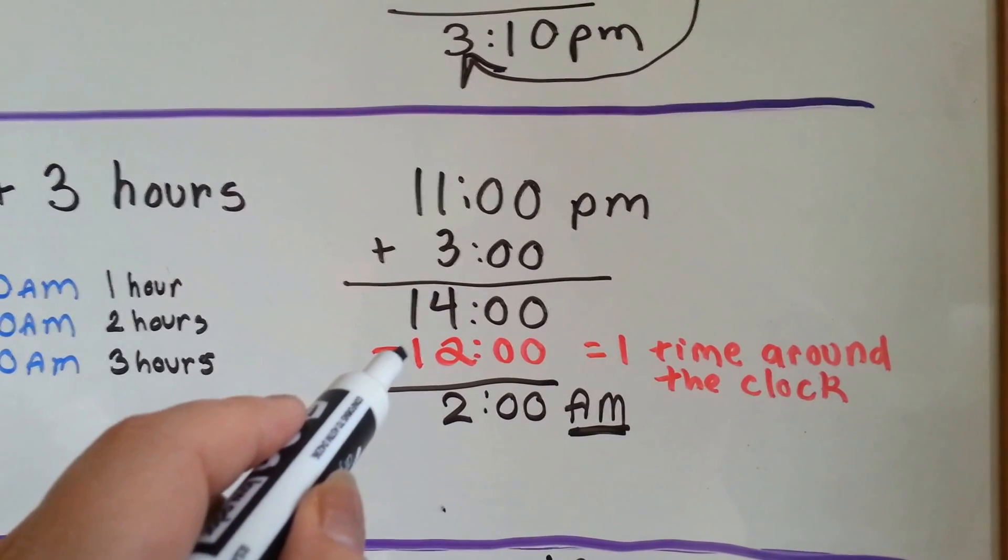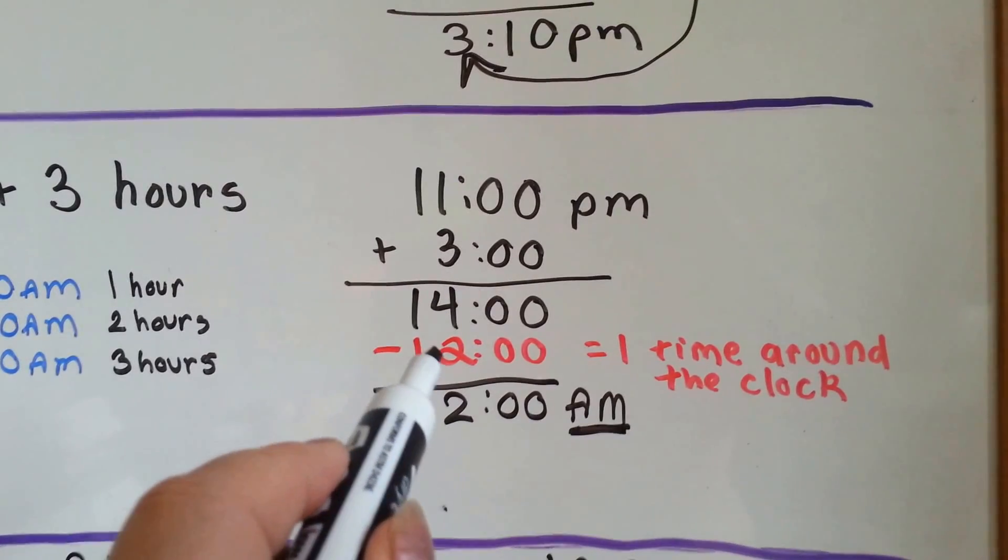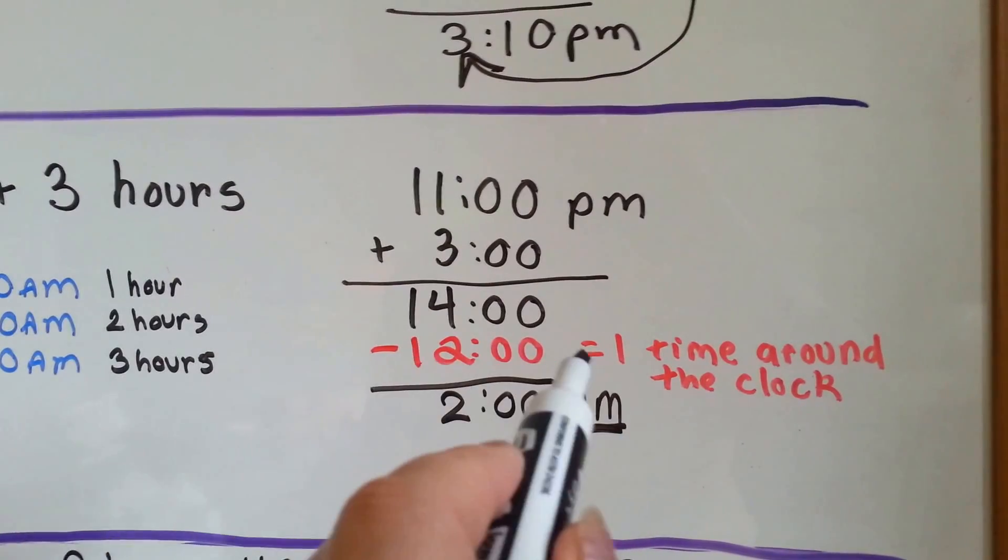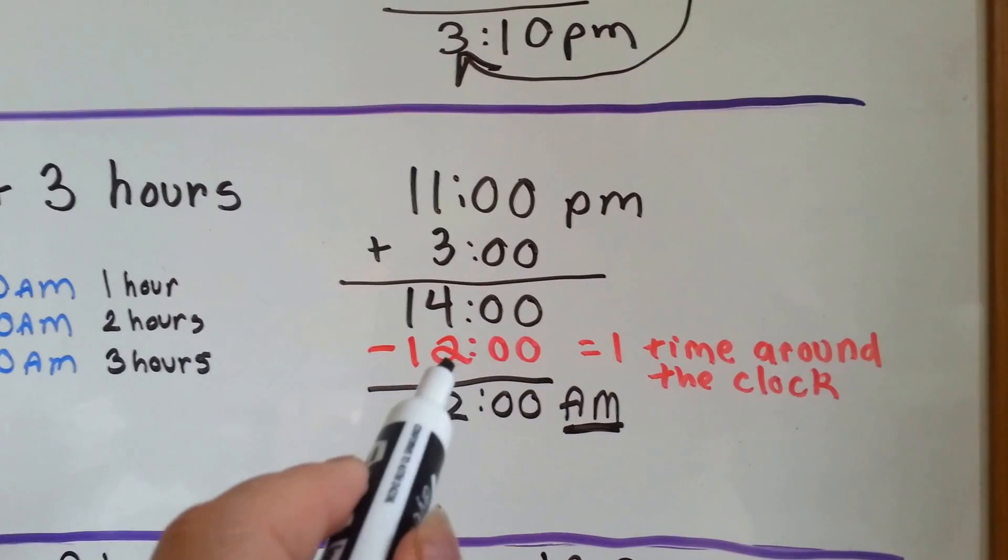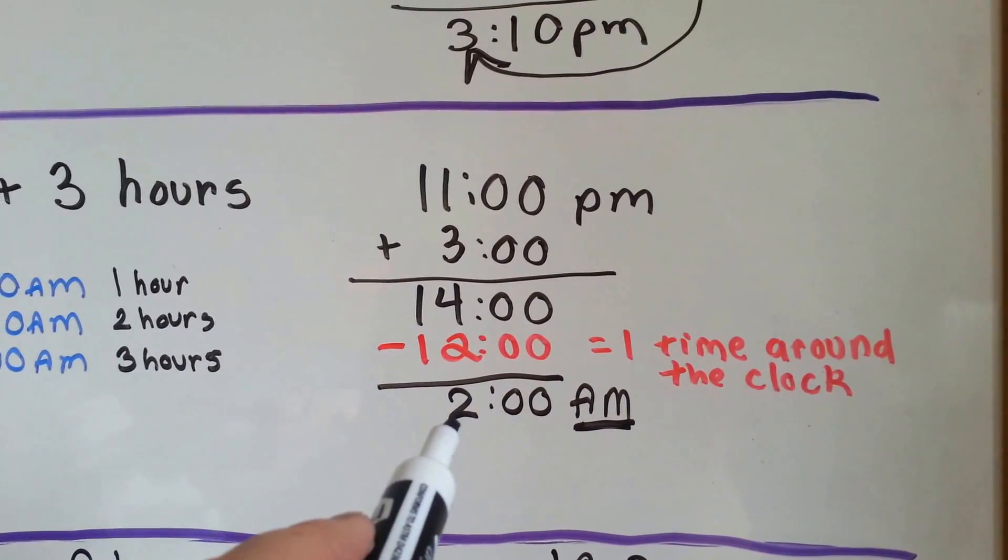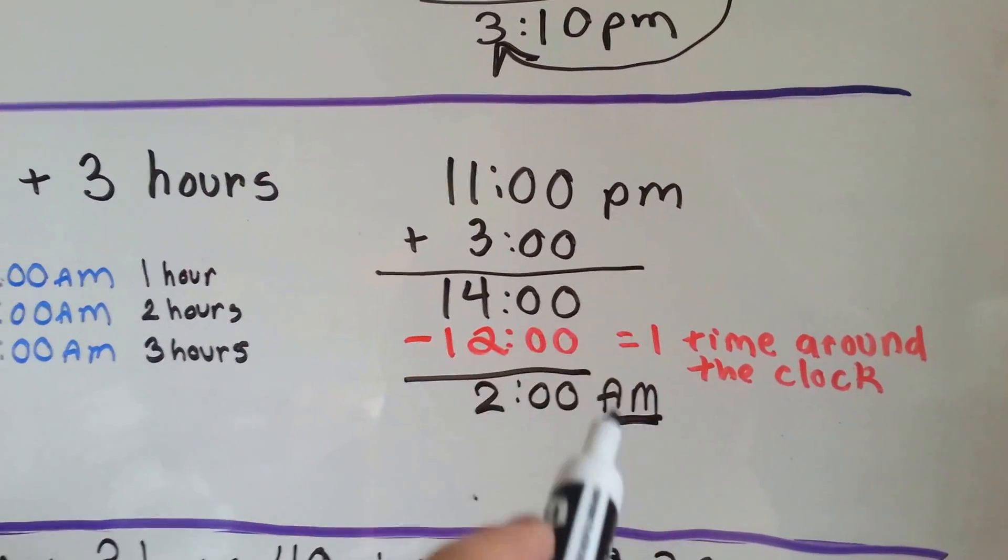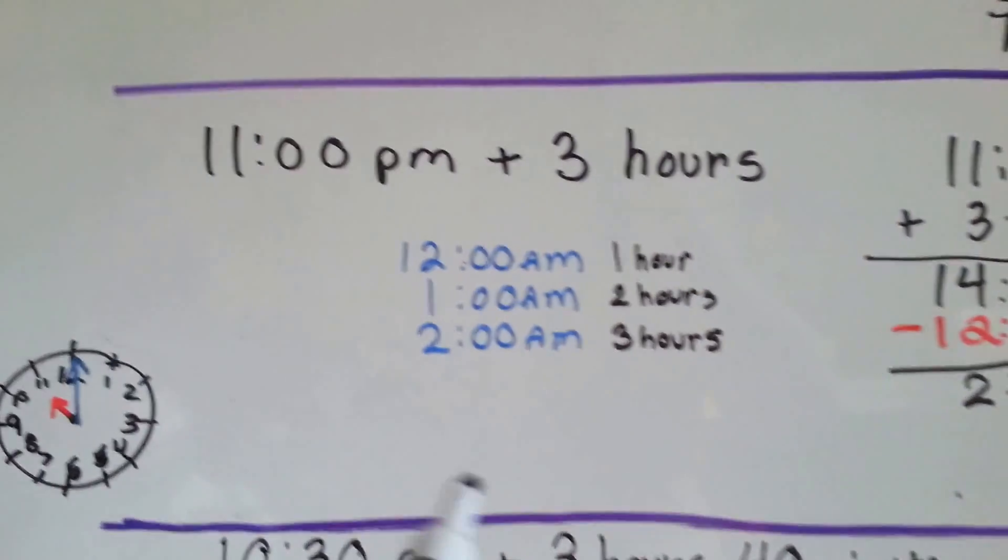Once it gets to 12, we have to regroup. So, we take the 12 o'clock, the 12 hours, the one time around the clock, and we subtract it from the 14, and we get 2 AM. It changes from PM to AM. So, let's see how this happened.